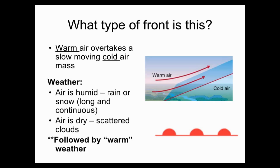When you have a warm front, if the air is really humid, it's going to bring long and continuous rain and snow — possibly several days. If the air is dry, it's just going to bring scattered clouds. Warm fronts are followed by warmer weather relative to what you were having, so if it was 19 degrees with snow, warm might mean the next few days are in the 20s.